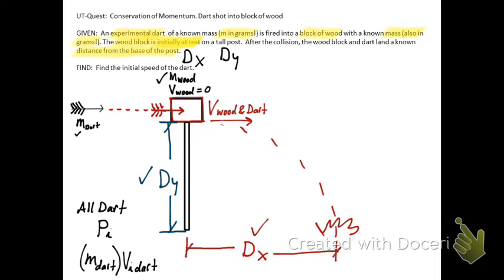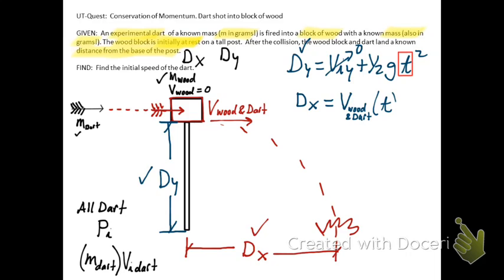The initial velocity of the object is the velocity of the block and wood immediately after the dart was stuck into it. So we remember from our half parabola equations, this equation here is our powerful one for finding time. Once I have time, I use this information, my distance in the x, and I can get that velocity, that initial horizontal velocity that the wood and the dart flew off the post at.